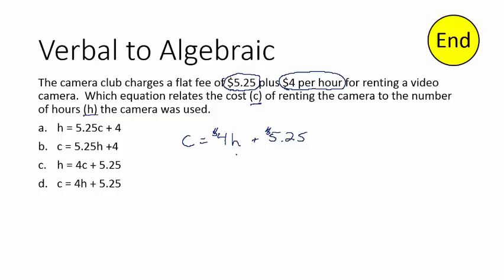So think about it this way: if I rented the thing for one hour, it's going to cost me $4 for that one hour plus $5.25, so that's $9.25. If this was a 2, it would cost $8 plus $5.25, and so on. But the cost goes here. If we match that to our choices, we get letter D right here.